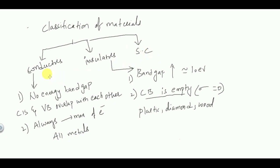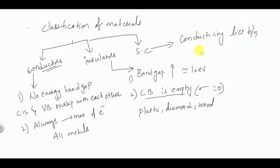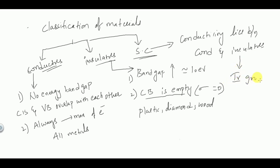In semiconductors, the conductivity lies between conductors and insulators. That type of material is called a semiconductor. For example, all fourth group elements are semiconductors. The most widely used semiconductors are silicon and germanium.